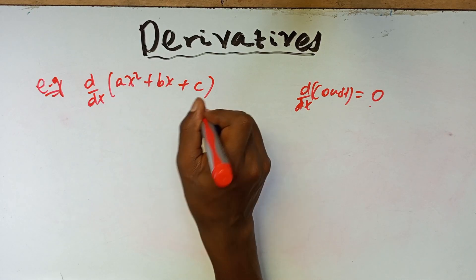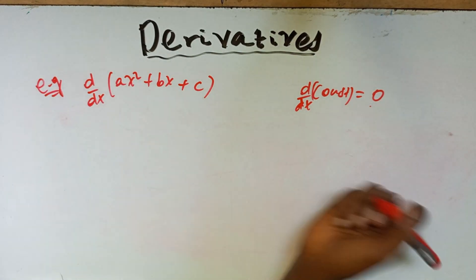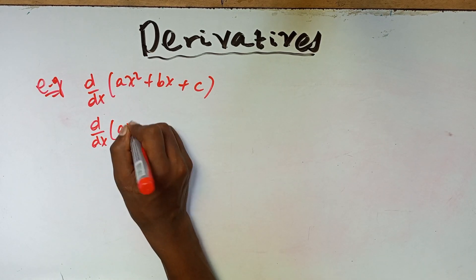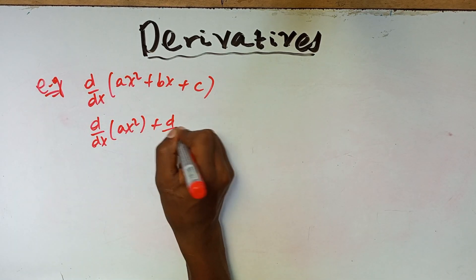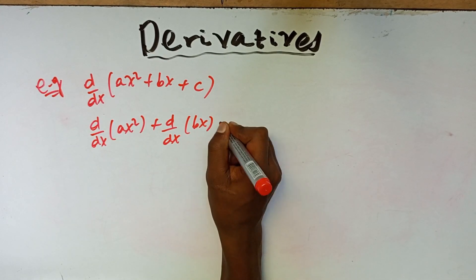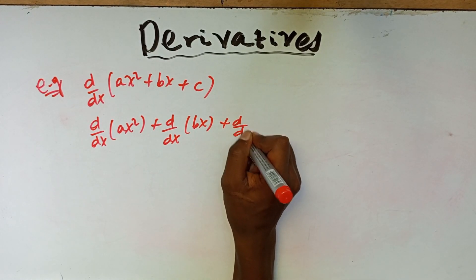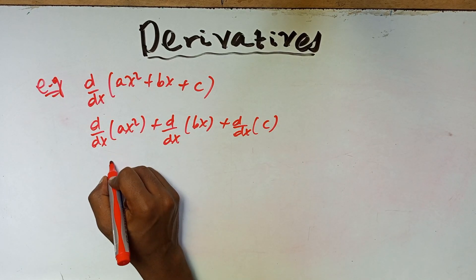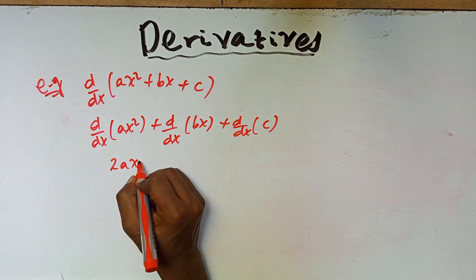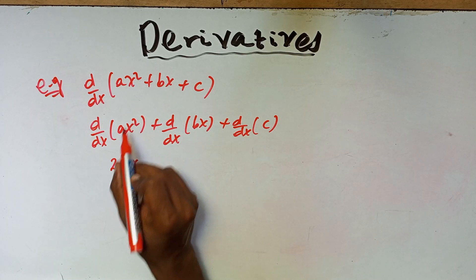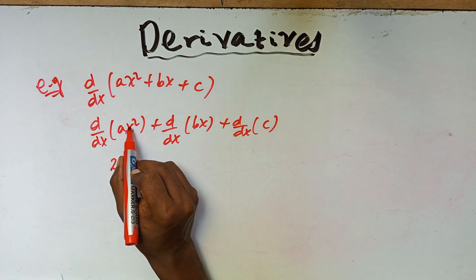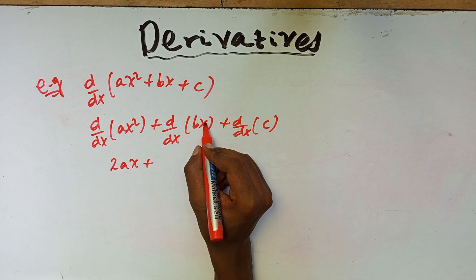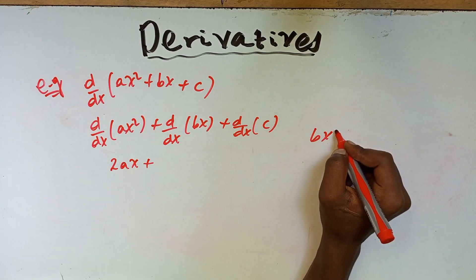The derivative of dx of a constant is always zero. So we split this as: d/dx of ax squared, plus d/dx of bx, plus d/dx of constant c. For ax squared, we bring the power down and reduce it by one, giving us 2ax.